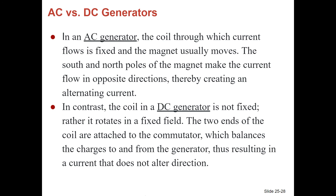In contrast, the coil in a DC generator is not fixed — it rotates in a fixed field. The two ends of the coil are attached to a commutator, which balances the charges to and from the generator, resulting in a current that does not alternate direction. We're going to watch some videos during class for more detail on generators. You really don't need to know generators in depth, but for more on generators and transformers, that information is found in Chapter 26.